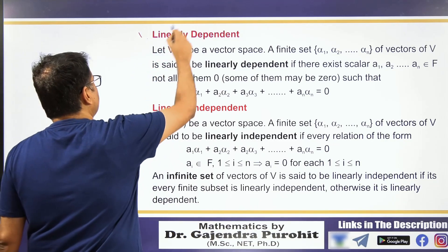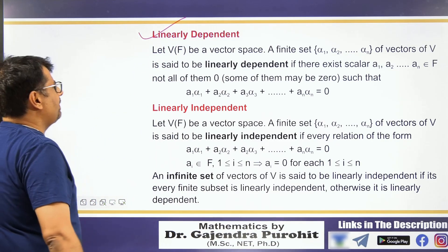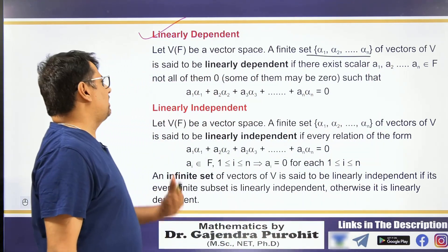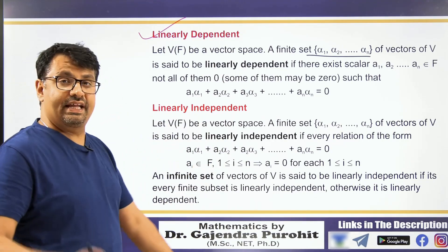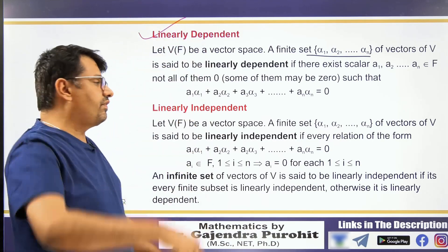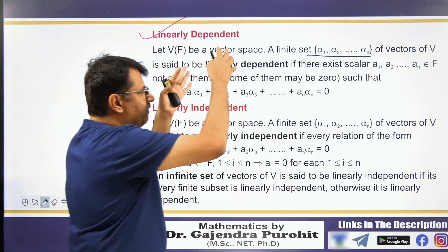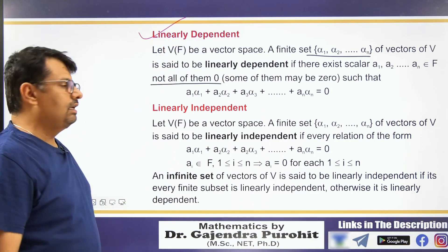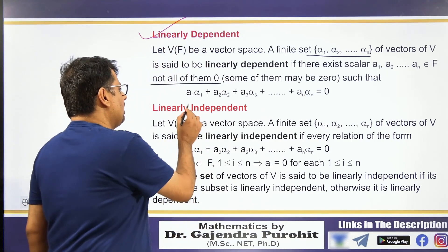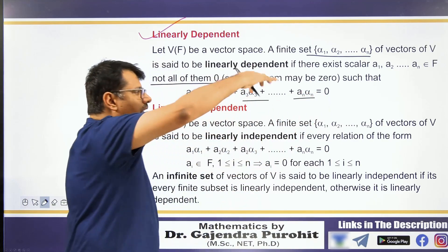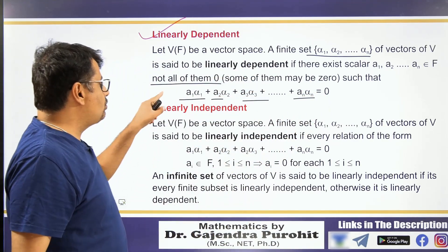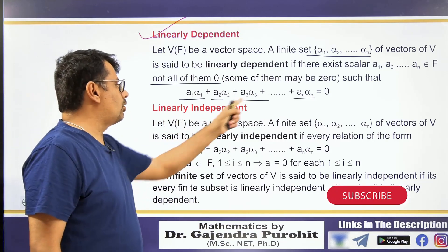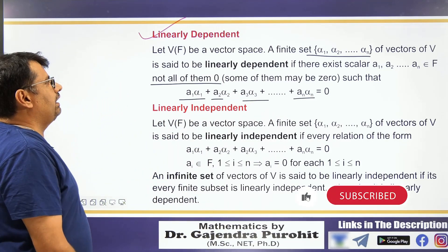Let's see what is linearly dependent. A finite set alpha 1, alpha 2, ..., alpha n of a vector space V is said to be linearly dependent if there exist scalars A1, A2, ..., An belonging to the field F such that the linear combination A1·alpha1 + A2·alpha2 + ... + An·alphan equals 0, where not all of A1, A2, ..., An are zero. If the linear combination equals zero with at least one non-zero scalar, it is linearly dependent.